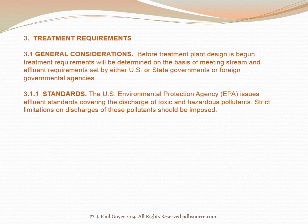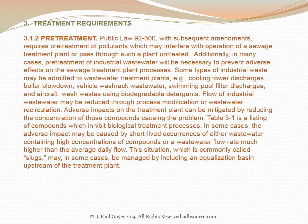With regard to treatment requirements, the general considerations are that before the treatment plant design has begun, treatment requirements need to be determined on the basis of meeting stream and effluent requirements set by either the US or state governments or foreign government agencies for a plant outside of the US. The US Environmental Protection Agency issues effluent standards covering the discharge of toxic and hazardous pollutants. Strict limitations on discharges of these pollutants must be imposed. Public law 92-500 with subsequent amendments requires pre-treatment of pollutants which may interfere with operation of a sewage treatment plant or pass through such a plant untreated. Additionally, in many cases, pre-treatment of industrial wastewater will be necessary to prevent adverse effects on the sewage treatment plant processes.